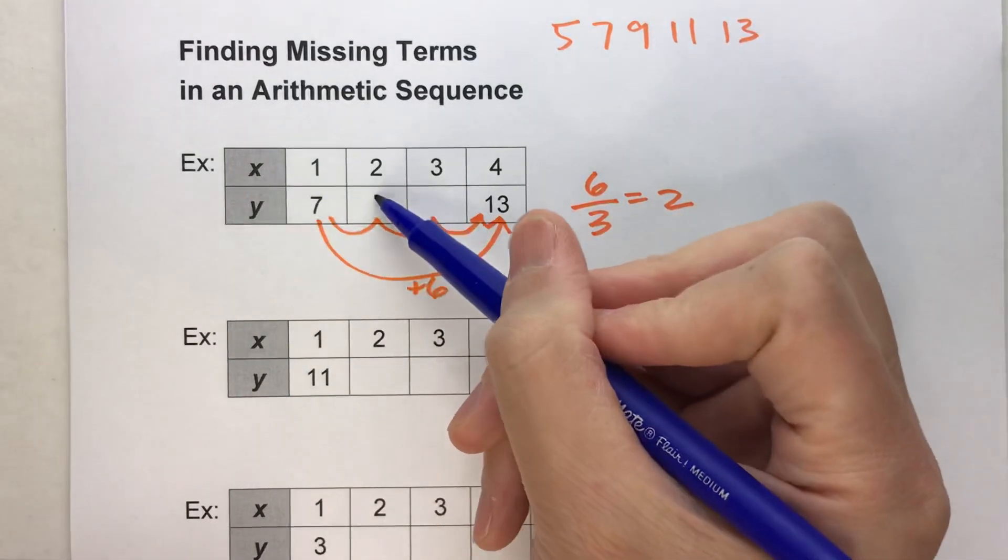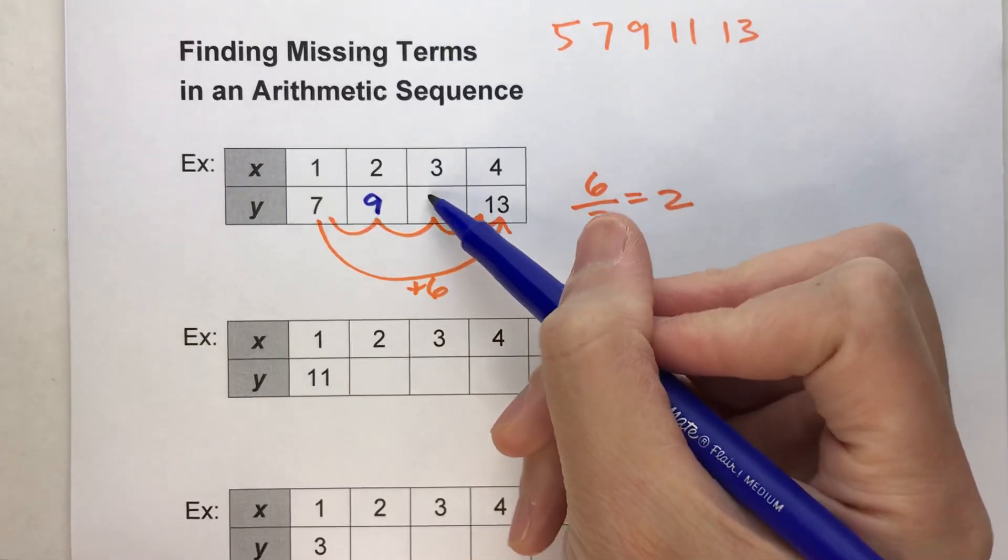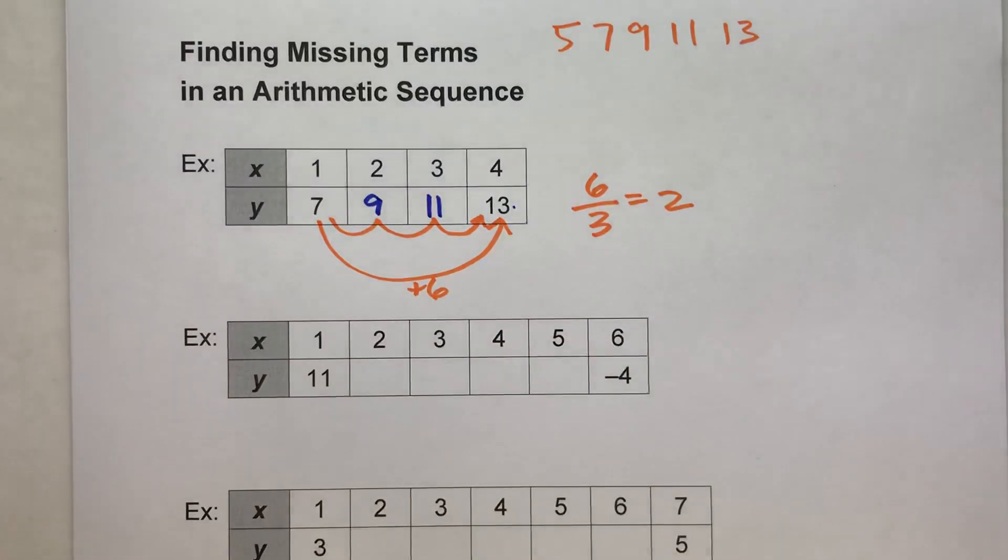So 7 plus 2 is 9. 9 plus 2 is 11. 11 plus 2 is 13. Boom. We got it.